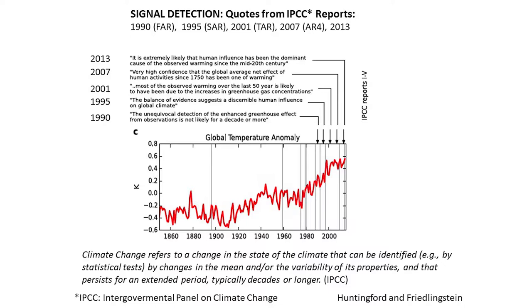This curve shows what the IPCC said about the temperature anomaly. Starting in 1990: 'the unequivocal detection of the enhanced greenhouse effect from observations is not likely for a decade or more.' As years go by, the temperature keeps going up. It ends with, in 2013: 'it's extremely likely that human influence has been the dominant cause of the observed warming since the mid-20th century.' As the temperature increases, we can be more and more confident that this is not natural, but is likely due to the increase in CO2 in the atmosphere.